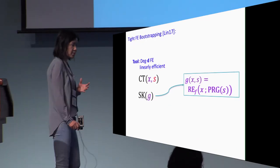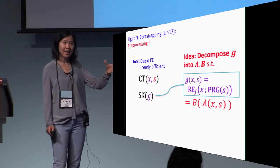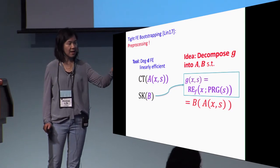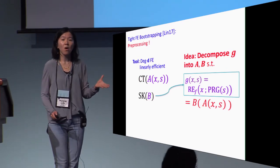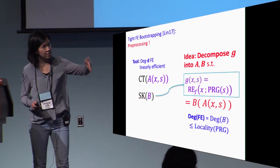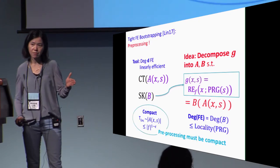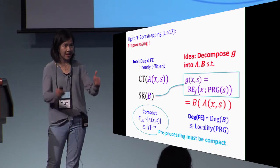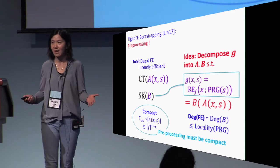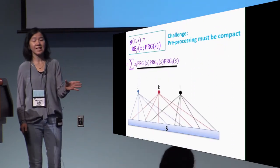To get tight FE bootstrapping, our key idea is to do preprocessing. What do we mean? We would like to decompose this function G into two parts, A and B, so that a part of the computation corresponding to function A can already be done at the encryption time, and the ciphertext encrypts the output of function A. Therefore at decryption time, we only need to do the rest of the computation corresponding to function B. If this can be done, then the degree of functional encryption decreases, and hopefully we will be able to bound it with the locality of the PRG. The only constraint is that we must make sure preprocessing is going to be compact. That is, the output of the function A is sublinear in the function size. Otherwise, you might as well just compute the function G entirely, and you don't need any degree anymore. The challenge is exactly in doing preprocessing compactly.